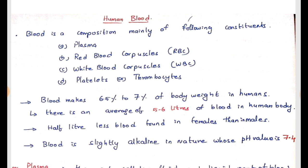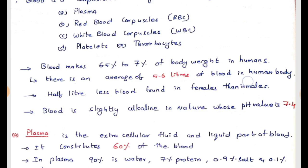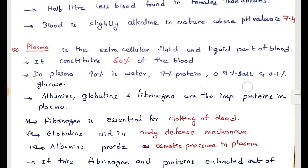This blood is alkaline in nature, not acidic. It is slightly alkaline. On the pH scale, we can measure 7.4 as the value for blood.